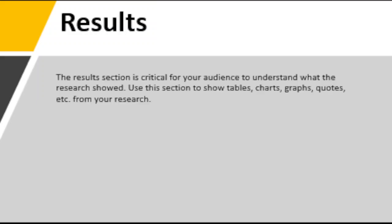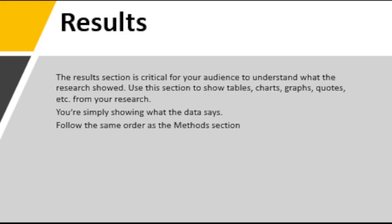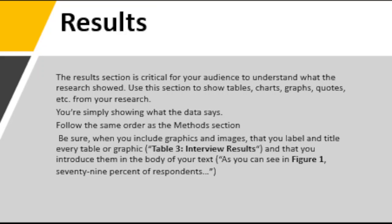The Results and Analysis and Discussion are in one part of the research. The results section is critical for the audience to understand what the research shows — it deals with the output of your experiment. Your results should simply show data, nothing more and nothing less. You should follow the same order as your methodology — if your methodology used Setup A, then Setup B, then Setup C, your results should also start with Setup A, then Setup B, then Setup C.